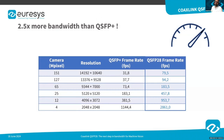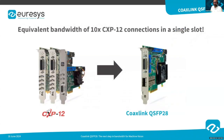To illustrate this big step in bandwidth, here we can see a frame rate comparison between QSFP+ and QSFP28. For the same camera resolution — for example, a 12 megapixel camera — with the QSFP+ it could reach 381 frames per second, and now with the QSFP28 we can go up to 953 frames per second. In terms of bandwidth, the Coaxlink QSFP28 board provides the same bandwidth as 10 CXP-12 connections in a single PCIe slot.